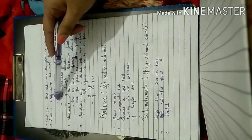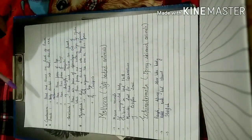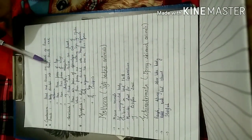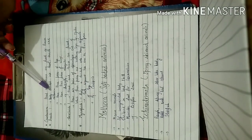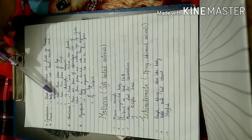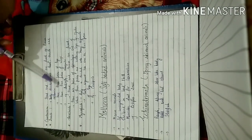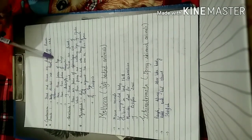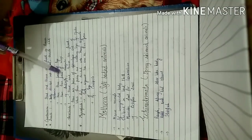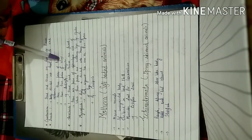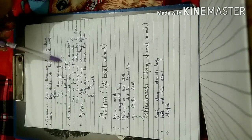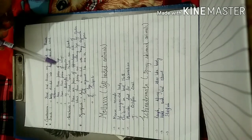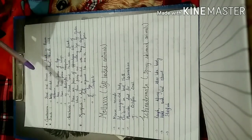Then there are insects. Their body is divided into head, thorax and abdomen and they have three pairs of legs and two pairs of wings. Examples include butterfly and mosquito — these are the insects.